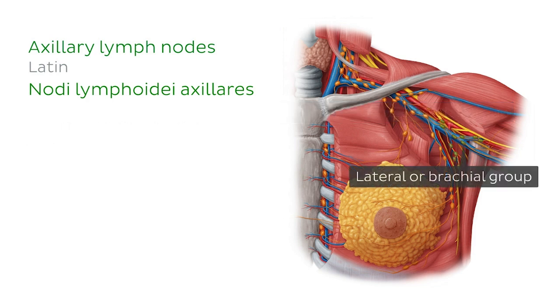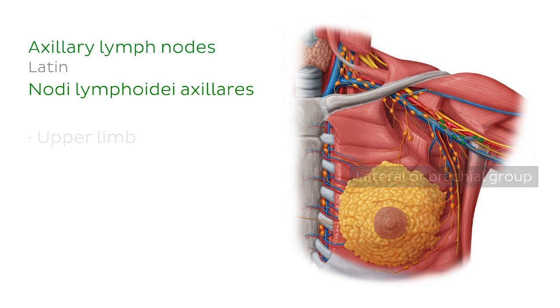The third is the lateral or brachial group, which drains the lymph from the superficial and deep compartments of the upper limb, except for the superficial vessels of the arm that run along the cephalic vein.